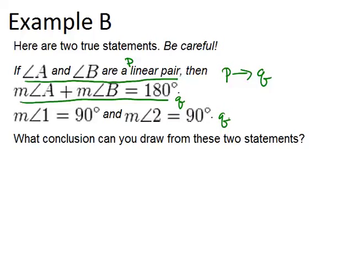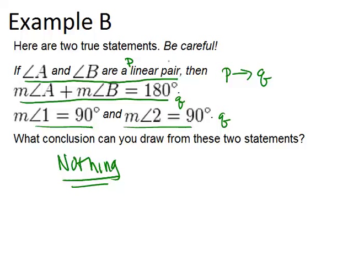What conclusion can you draw? Actually, nothing. This is not one of those logical properties. If P then Q is true and Q is true, it doesn't mean that P has to be true. Just because these two angles are each 90 degrees doesn't mean they have to be a linear pair. Maybe they're just two 90-degree angles completely separate from each other. To be a linear pair, they have to be adjacent and make a straight line. So there's really no conclusion we can draw from those statements.